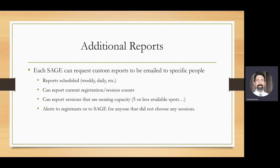You can also request additional reports. Each SAGE group can have a custom report emailed on a custom schedule — weekly or daily. You can report on the current number of registrations or session counts, how many people have registered for your event or for each session. We can also generate a report for sessions nearing capacity with five or fewer spots, which may trigger you to move that session to a larger room and increase capacity. We can also generate alerts for registrants or to you for anyone who went through the registration process but chose no sessions. A survey will be coming out to allow you to indicate which additional reports and custom features you wish to enable.